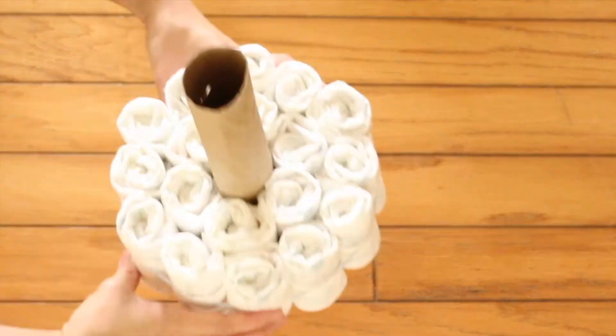For the 2nd round, wrap 12 rolled diapers around the 6 rolled diapers with yarn. Then, remove the hair ties.